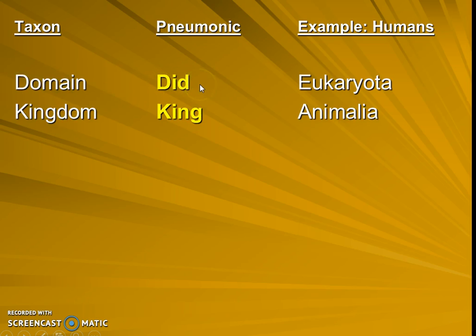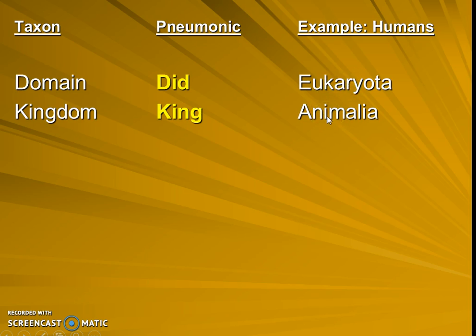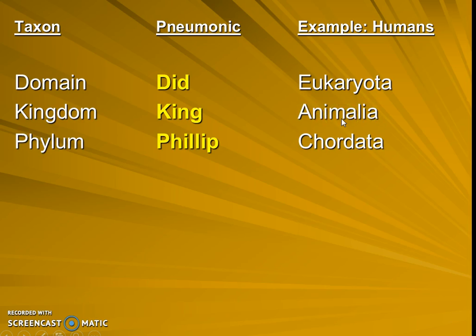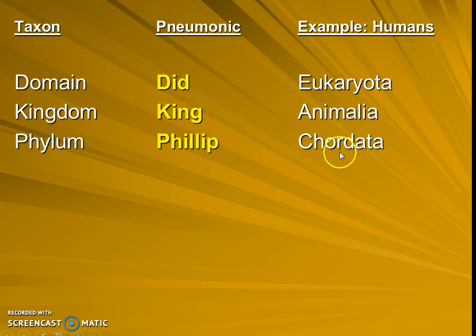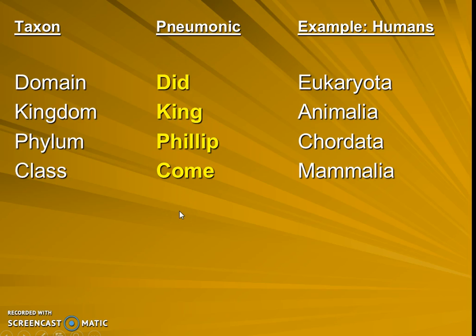Our kingdom is the animal kingdom — kingdom is a smaller category because eukaryotes are not just animals; they're also plants, fungi, and protists. Then phylum — try saying phylum. Our phylum is actually the chordata phylum, meaning that we have backbones. Here we can see a sentence beginning to form to make a silly mnemonic device to help us remember.